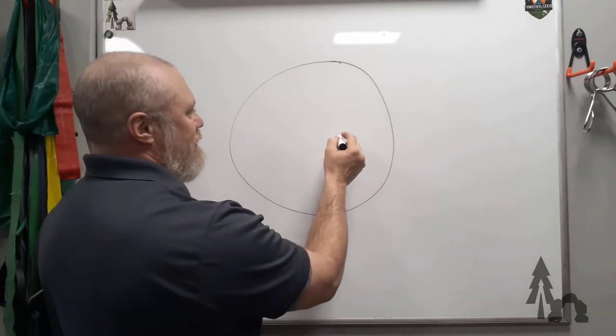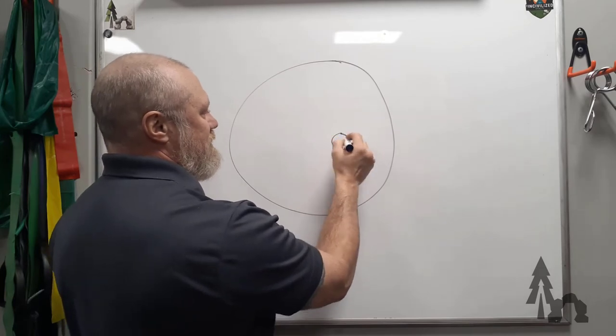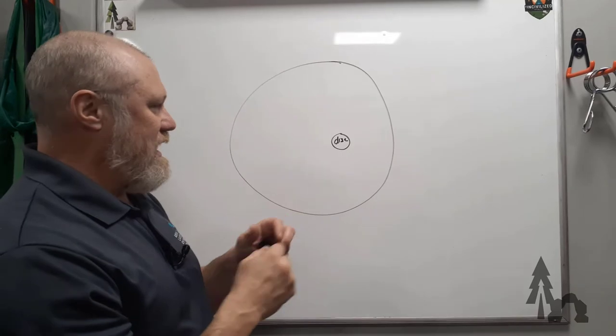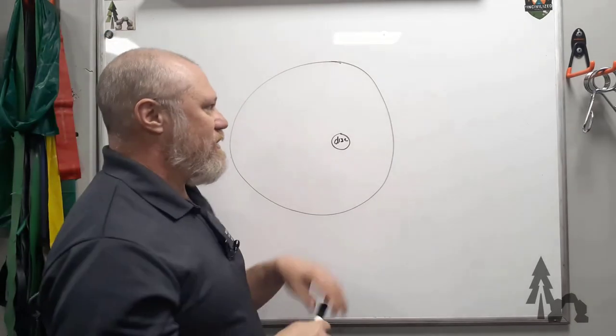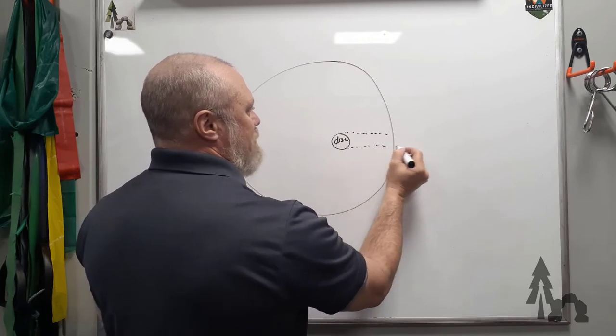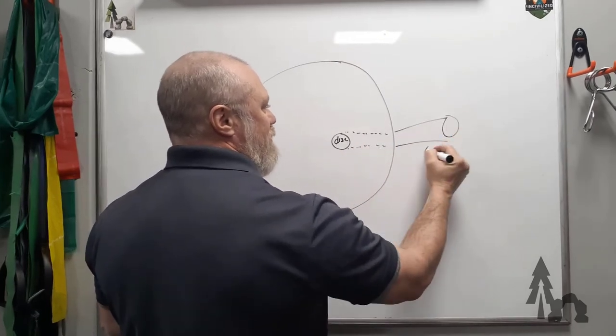So, back of the eyeball, you're going to have the optic disc. Think of the optic disc as the area at the back of the retina where the optic nerve would leave the back of the eyeball.